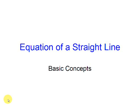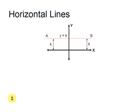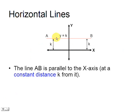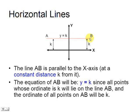Equation of a straight line. A line AB is parallel to the x-axis when all of its points are at a constant distance from it. That equation would be y equals k.